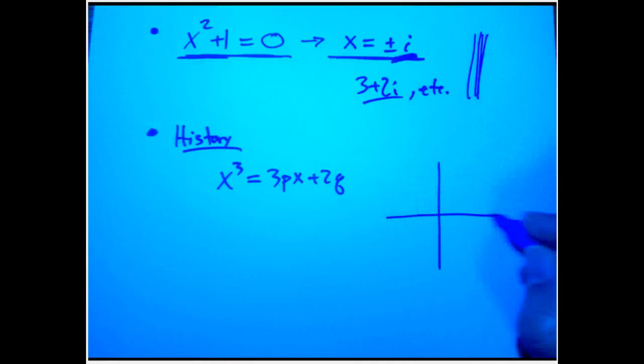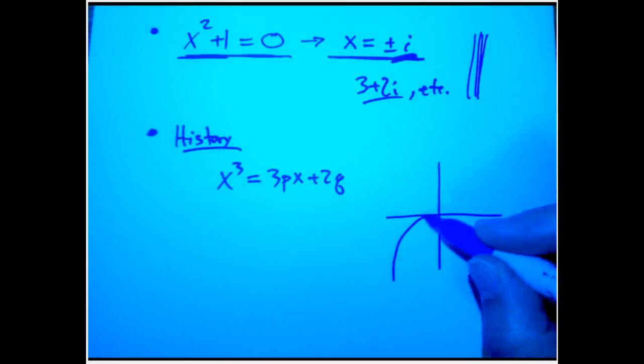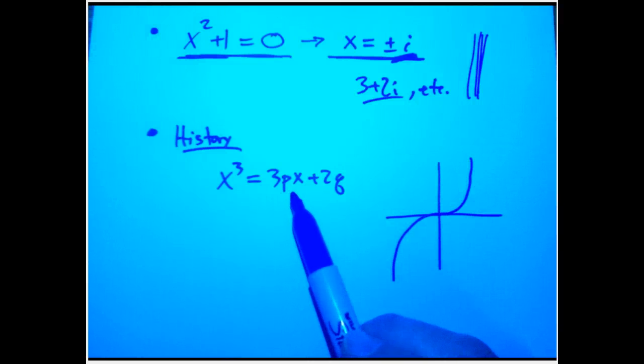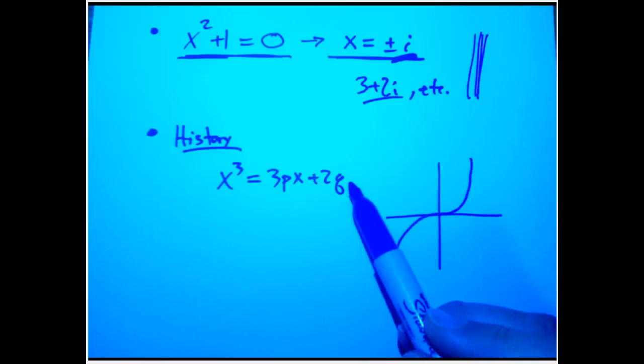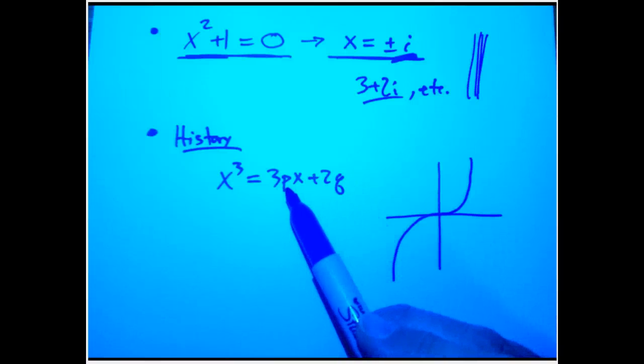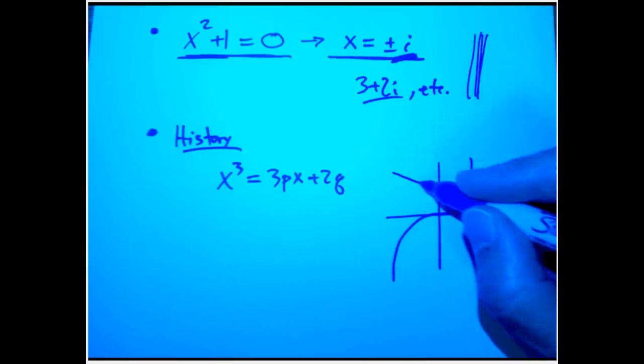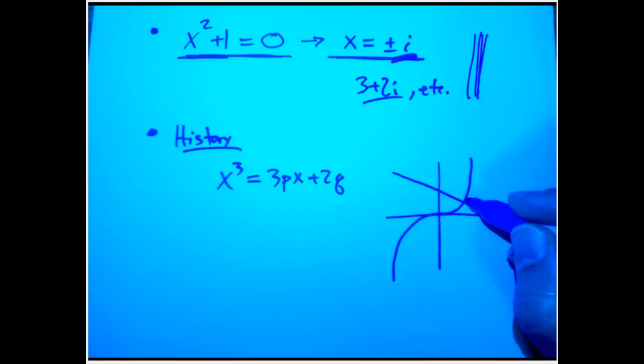So what is this geometrically? We're trying to intersect the cubic with a straight line. Let's assume that q is positive and assume that p is negative, just to make things simple. That's a straight line with negative slope and that's going to have some unique intersection there.